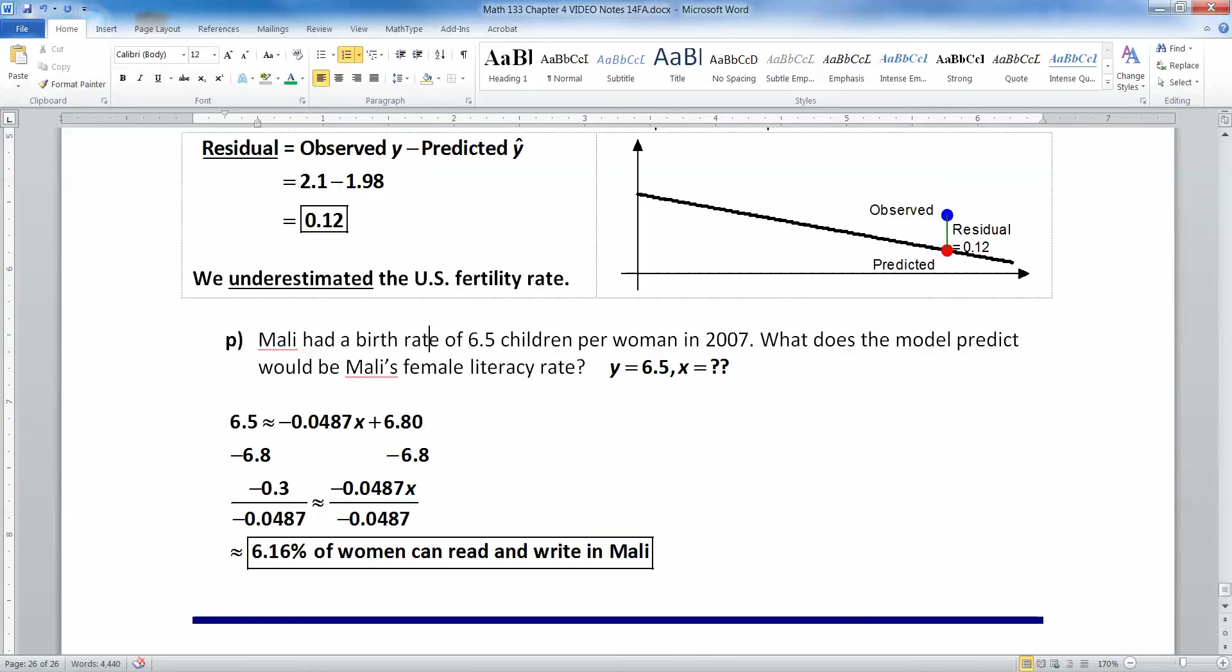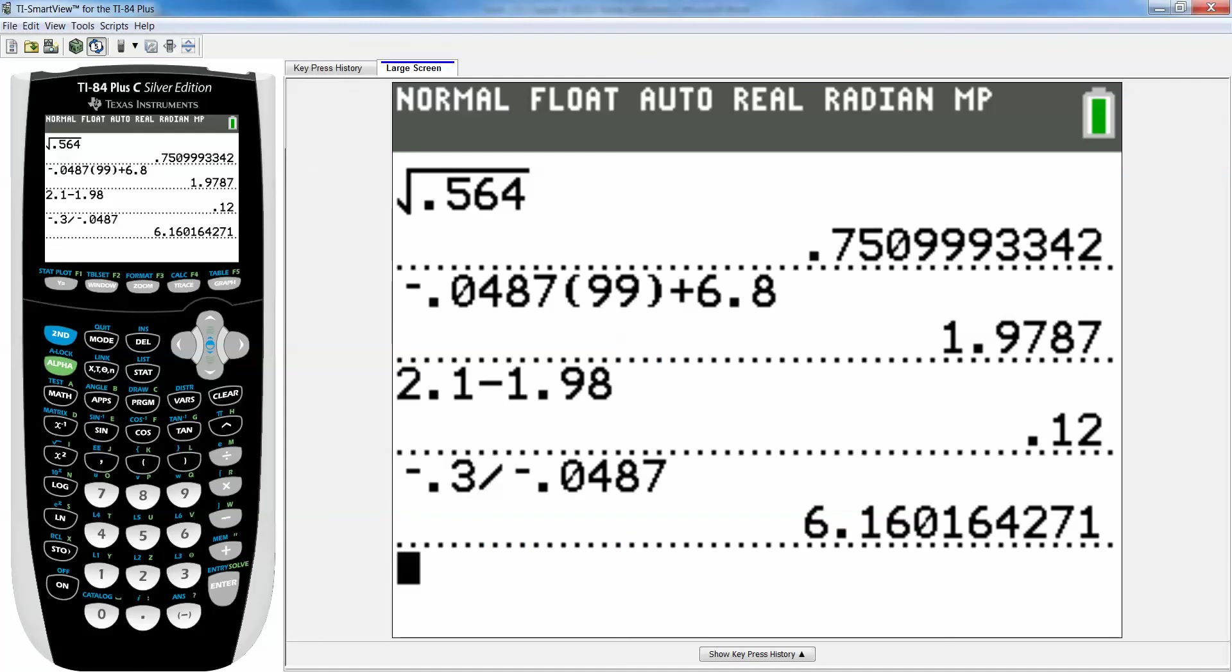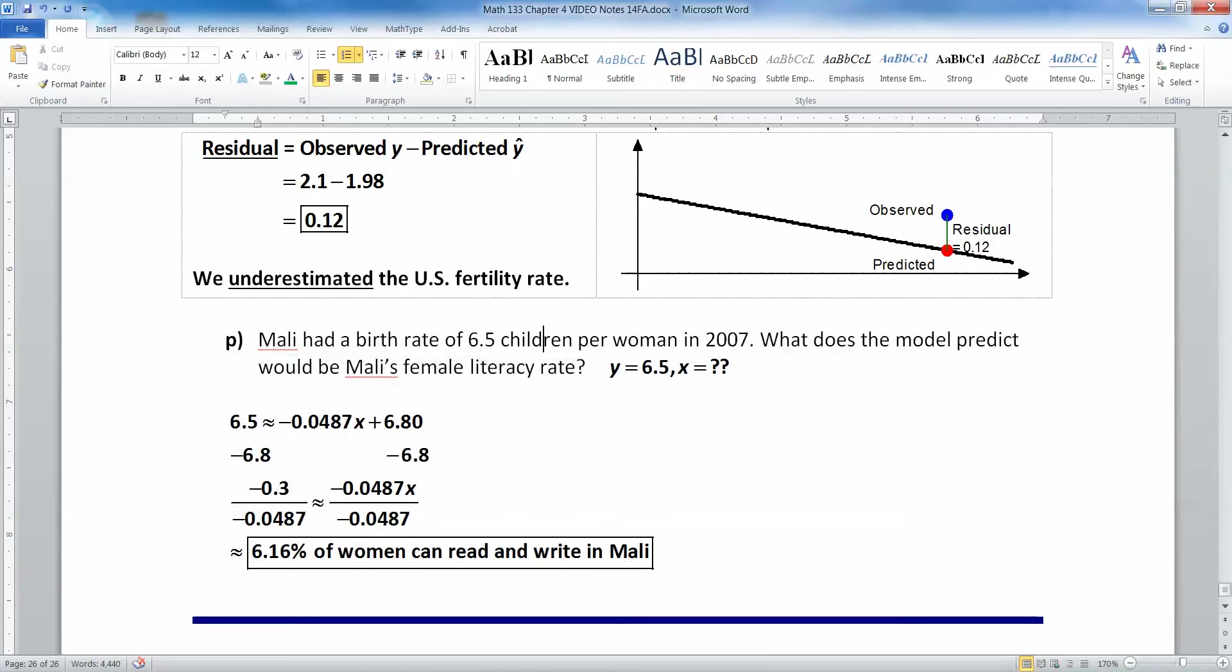Last but not least, Mali has a birth rate of 6.5 children per woman. What's its literacy rate? So that means you have Y 6.5, you plug in 6.5 for Y, and then you solve it for X, and you're going to get 6.16% of women in Mali can read and write. You can see I subtracted 6.8 from both sides. I'll get negative 0.3 here, and then I divide it with my calculator right there, and I get 6.16%, which of course is very low, and that would make sense. Mali is a poor country with a high fertility rate and a low female literacy rate.